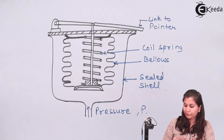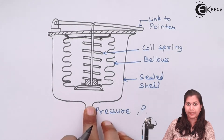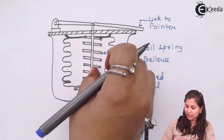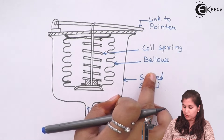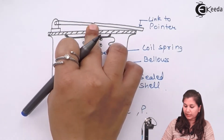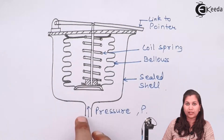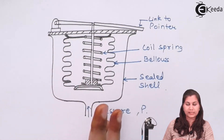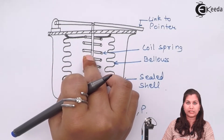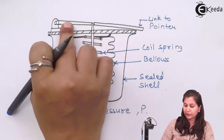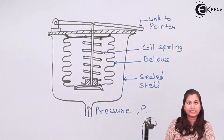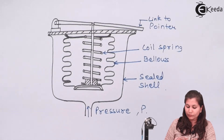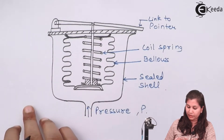This is the diagram for the spring loaded bellows. Here the pressure is applied, and in the middle you can see we are having the coil spring, and around that we are having the bellows or the corrugations. This spring in between is connected with the pointer. As soon as the pressure is applied, the bellows are going to expand, due to which the spring is also going to expand or contract, and the movement of the spring is connected with the pointer. So the pointer is going to move over the scale through which we can get the readings of the pressure. In this way the pressure is measured with the help of the spring loaded bellows.